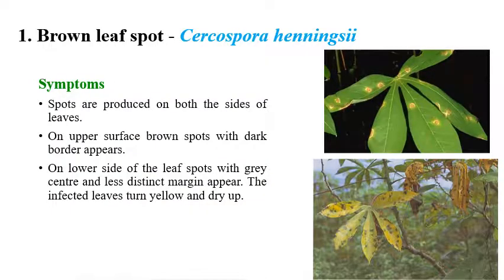Brown leaf spot is caused by Cercospora henningsii. Symptoms can be observed on both surfaces of the leaf — upper and lower. On the upper surface, dark-colored borders along with brown spots can be seen. On the lower surface, leaf spots with gray centers or gray margins can be observed.